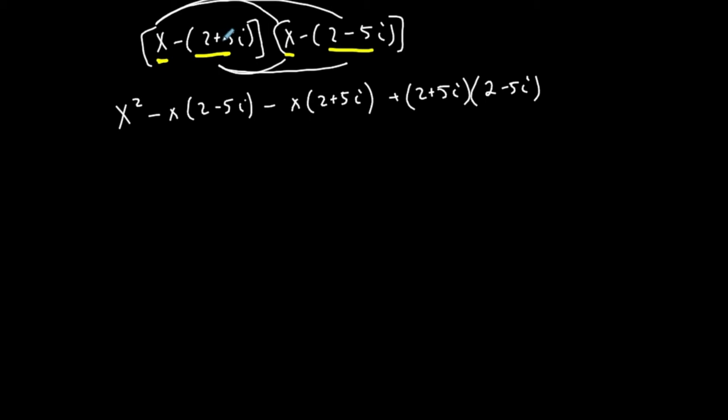Now I'll deal with distribution where this negative will distribute: minus 2x plus 5ix. Distribute this: minus 2x minus 5ix. And another FOIL here: first, four; outer, minus 10i; inner, plus 10i; and last, minus 25i squared.